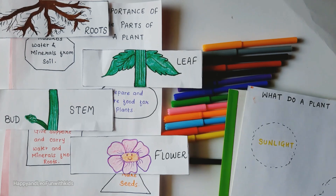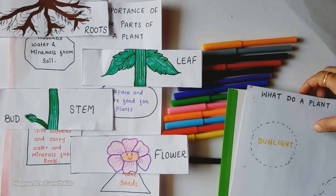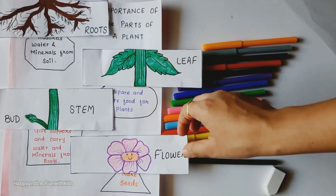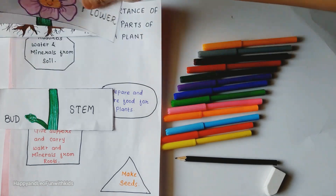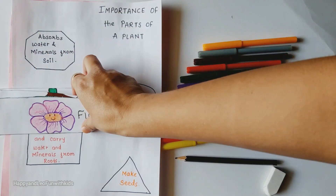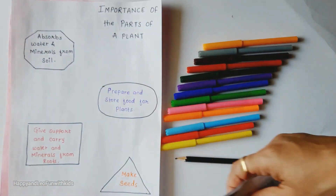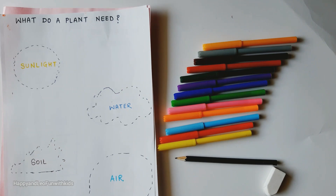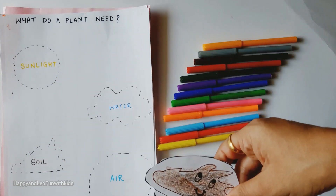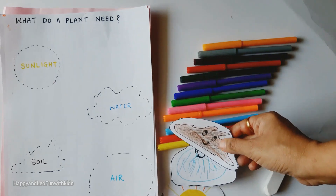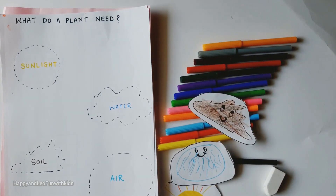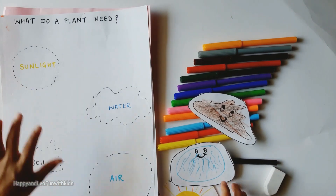So this is also the second type of workshop — importance of parts of a plant. Now for the third workshop, I have given again four cutouts. You have to read it and keep it. What do plants need? Sunlight!